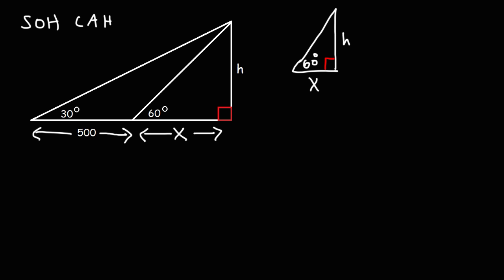And it helps us to remember the three trigonometric ratios. S is for sine, C is for cosine, T is for tangent. I'm going to focus on tangent. Tangent of the angle, that is tangent of 60 degrees, is equal to the opposite side divided by the adjacent side.